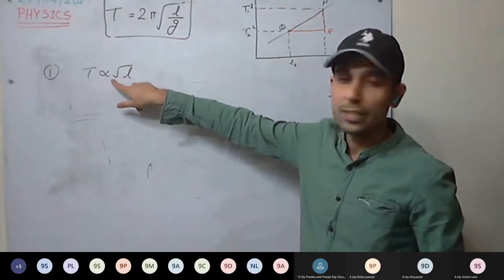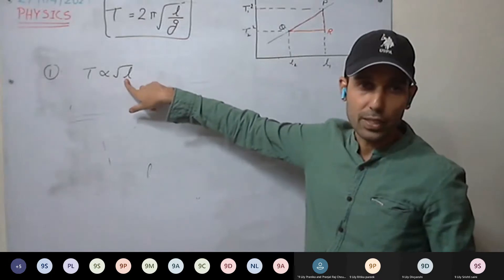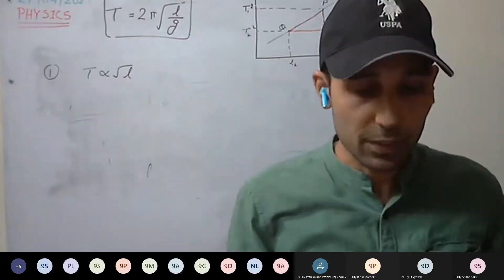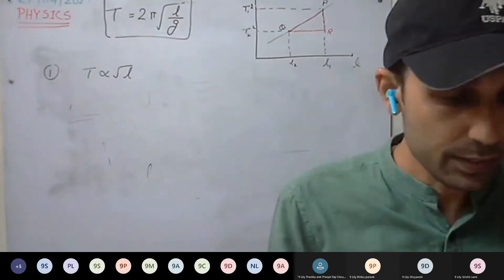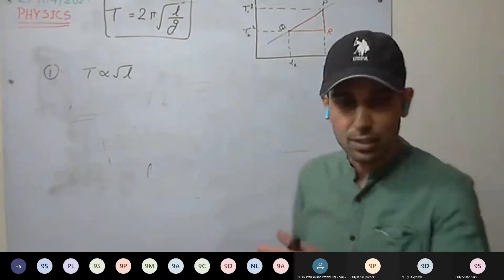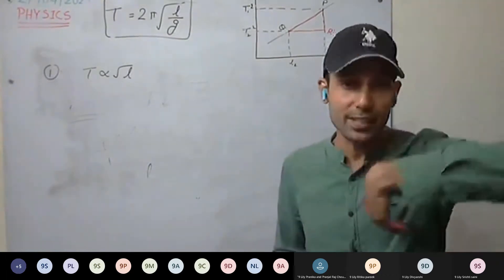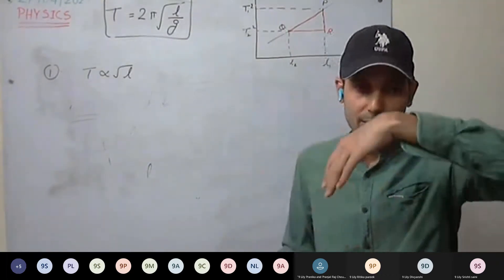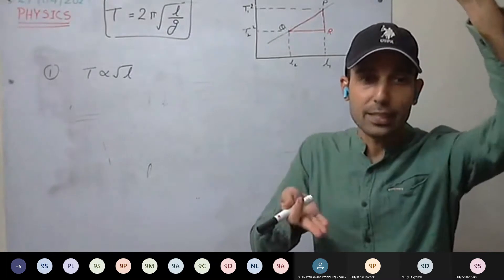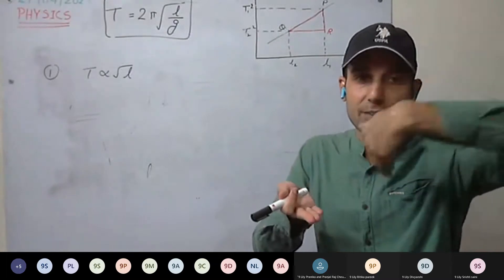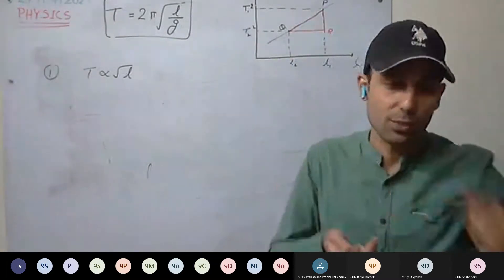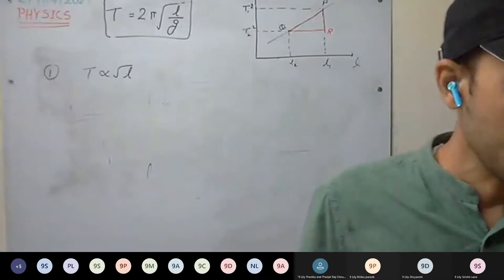Time period is directly related to the square root of L. One example: while you are standing on a swing, your center of mass rises up, giving less effective length, so you move faster.